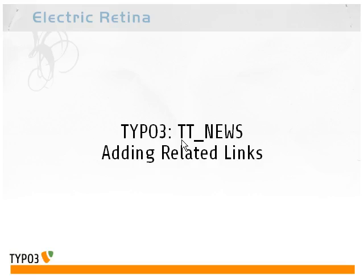What we want to be able to do is create a list of one or more links that are related to the article, so that the reader at the bottom of the article will get a list of some links either that were mentioned in the article or that are related to what you were talking about.